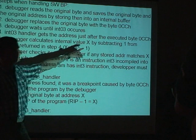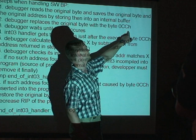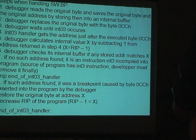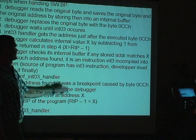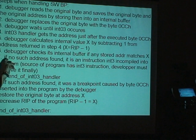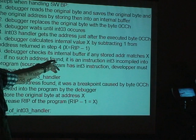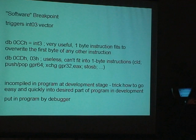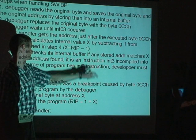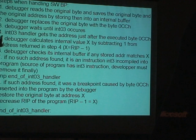The instruction is reported after the debugger subtracts one and gets the start address of this instruction. As the sixth step, the debugger checks its internal buffer whether this address X is stored and matches. If no such address is found, it is not a breakpoint put into the program by the debugger — it is a breakpoint compiled into the program. If such an address in the internal buffer is found, it means it was a software breakpoint put into the program by the debugger, by these two steps.